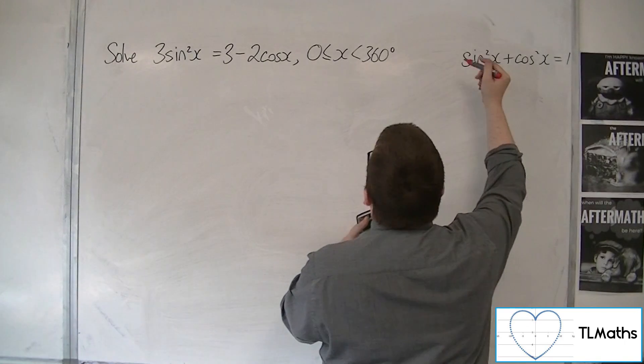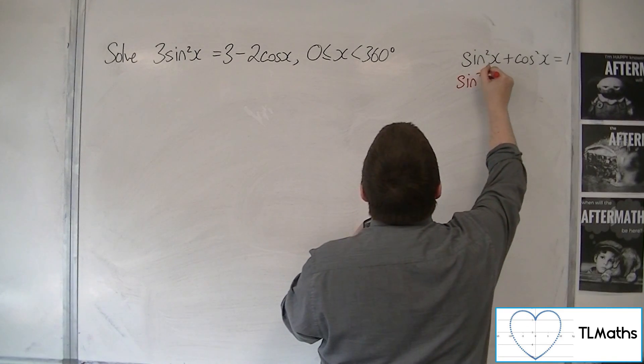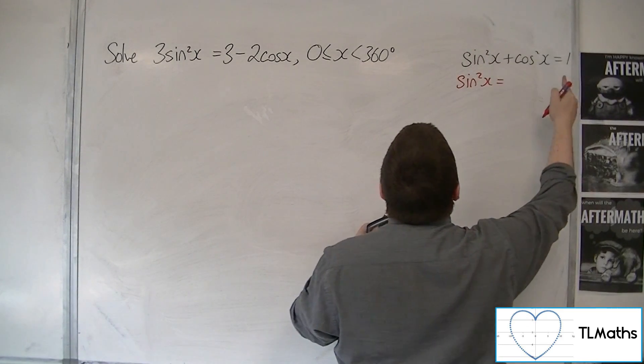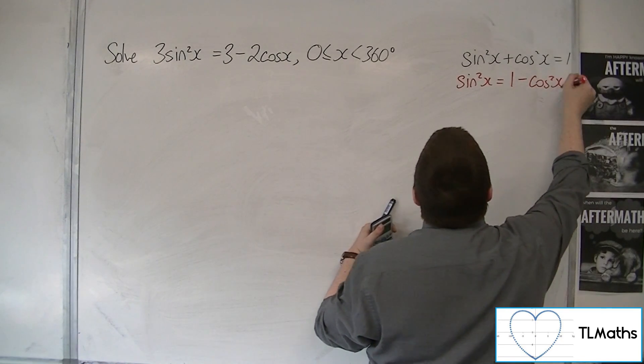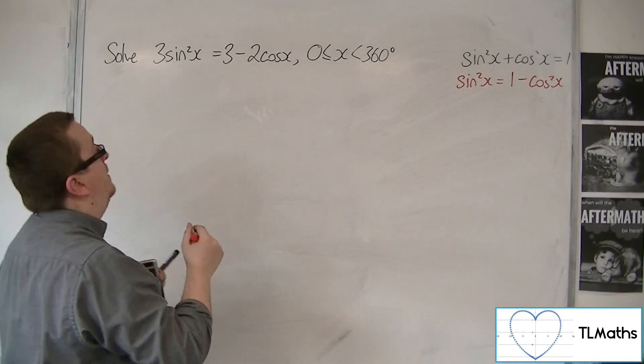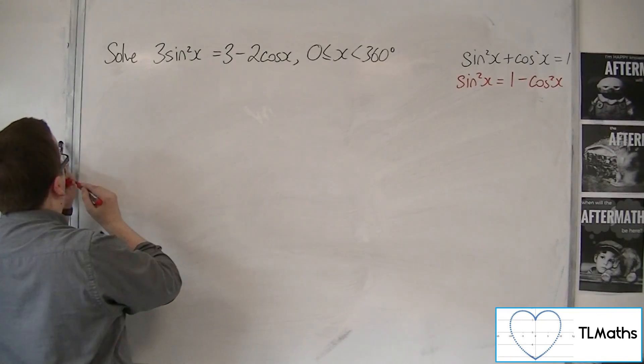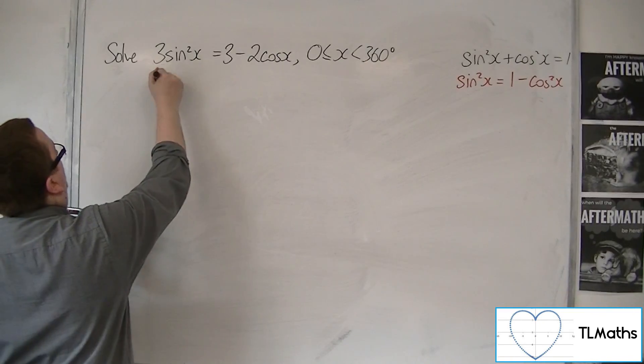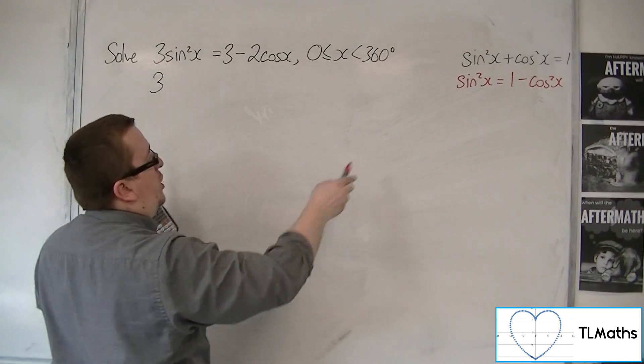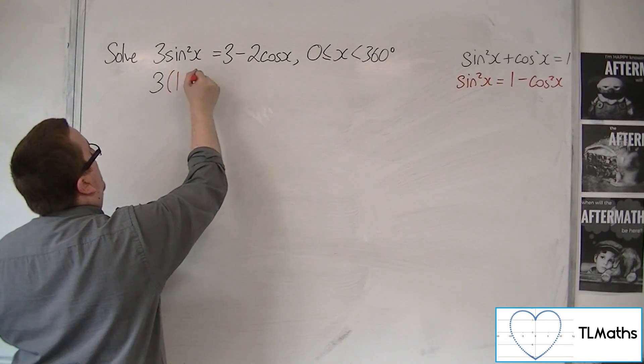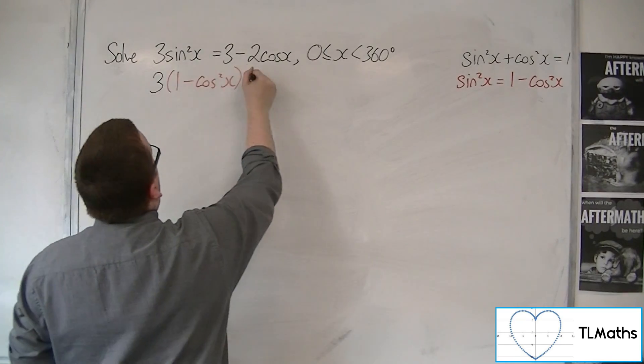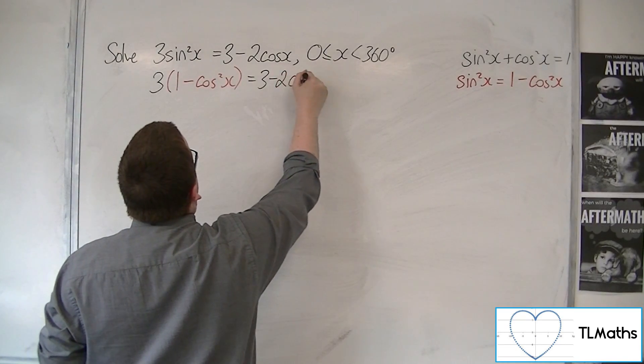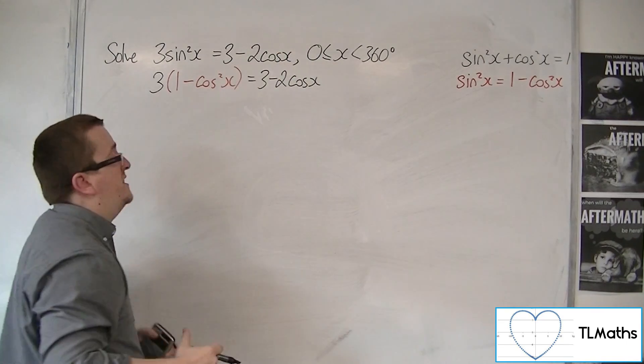So if I rearrange this to get sine squared equals, I can take cos squared from both sides. And I can use that as my replacement. So I'm going to have 3 lots of sine squared, which I can replace with the 1 minus cos squared x. And that's going to be equal to 3 minus 2 cos x. The right-hand side stays the same.